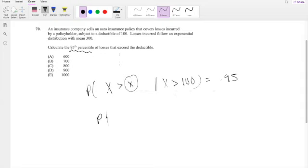So by the formula, this is equal to the probability that X is greater than x and X is greater than 100, divided by the probability that X is greater than 100.